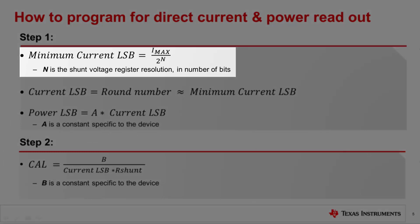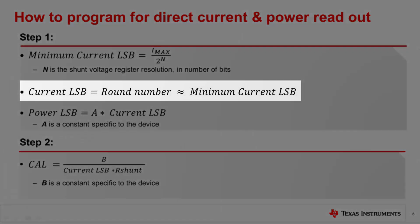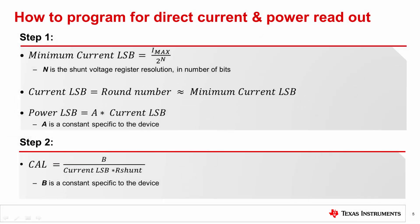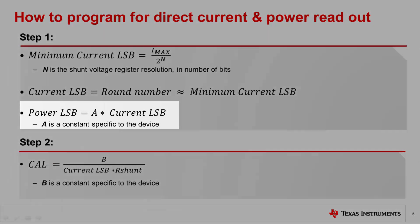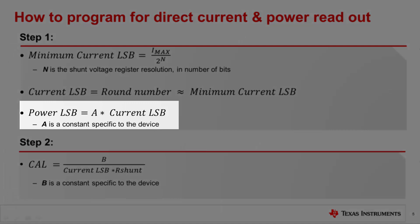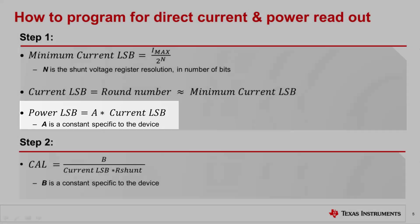The minimum current LSB is calculated as the maximum expected current divided by 2 to the power of N, where N is the resolution of the current register in number of bits. It is common to select a current LSB to be a round number larger than the minimum current LSB value to simplify the calculation. Next, the power LSB is calculated as the current LSB times a scalar A, where A is a constant specific to the digital power monitor device.